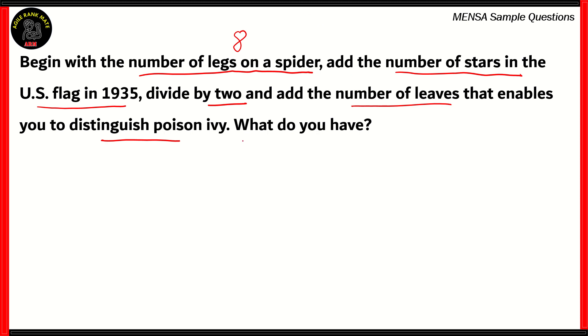But what about the other two? Now for poison ivy, there is a popular saying that goes, 'leaflet three, let it be,' which means that if you find a plant with three leaflets on a stalk, then it's best to avoid it because it's most likely poison ivy. So poison ivy has three leaflets on a stalk. So that's the number that we're looking for. So eight legs, three leaves. Now what about the stars in the US flag of 1935?